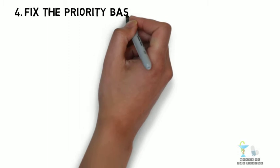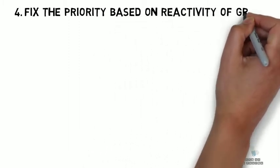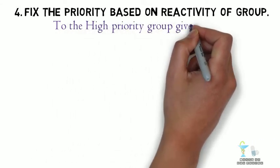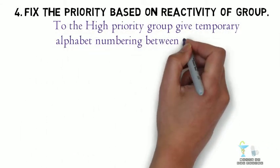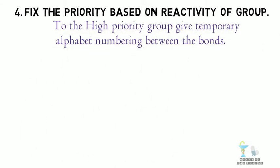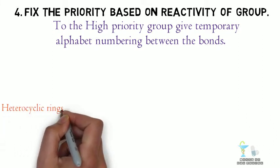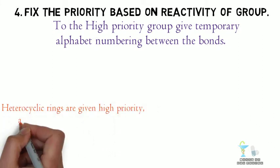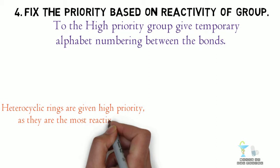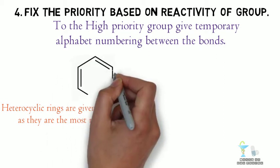fix the priority based on the reactivity of the group. Now to the high priority group, give temporary alphabet numbering between the bonds. Mostly the heterocyclic rings are given high priority as they are the most reactive one. In this example,